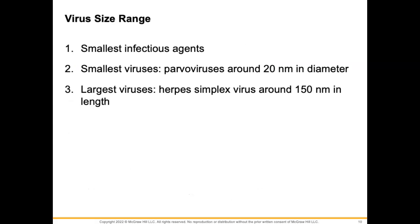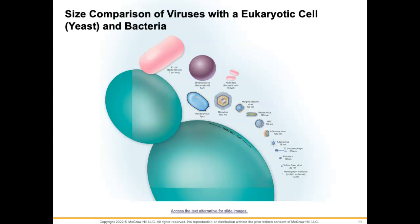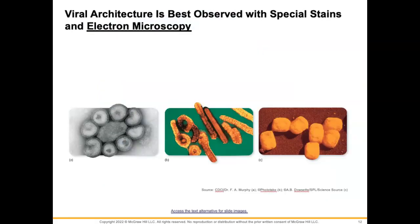Viruses are the smallest infectious agents. The smallest viruses are about 20 nanometers — that would be parvovirus. The largest is herpes simplex, about 150 nanometers. Here is a size comparison of viruses with bacteria and yeast cells. These are yeast cells, then E. coli and streptococcus, getting smaller and smaller — these are all viruses here, and then down to a hemoglobin molecule, just to show size comparison.